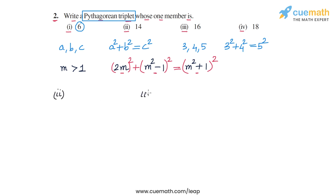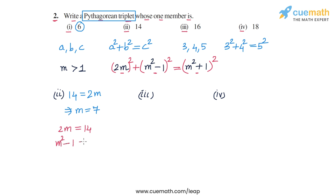For part 2, setting 14 = 2M gives M = 7. The Pythagorean triplet is: 2M = 14, M² − 1 = 49 − 1 = 48, and M² + 1 = 49 + 1 = 50. So the answer for part 2 is 14, 48, and 50, of which 14 is a member.